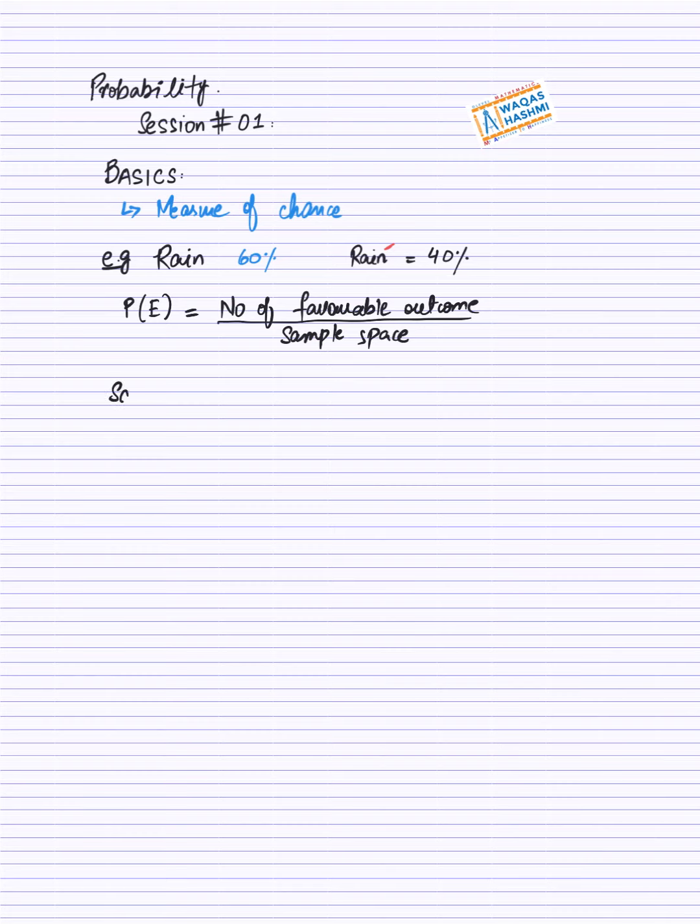Ab ye sample space kya hota hai? So, ab hum baat karte hai, zara sample space ke baare mein. Sample space, basically kya hota hai, yeh aapke paas total number of possible outcomes. Total number of possible outcomes yeh hota hai, yeh aapke paas sample space.